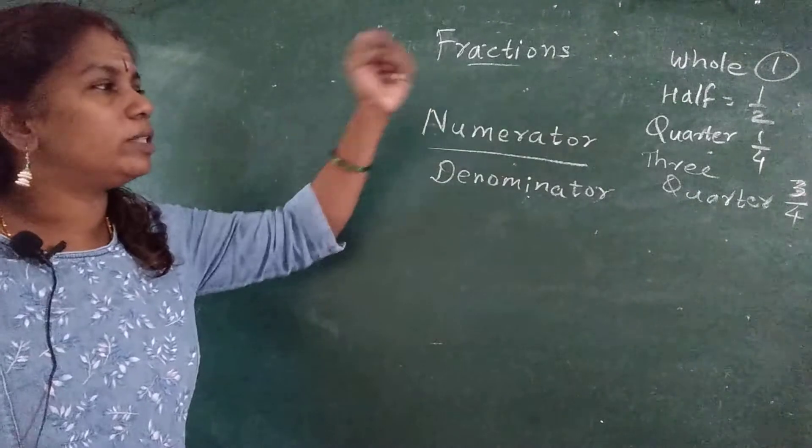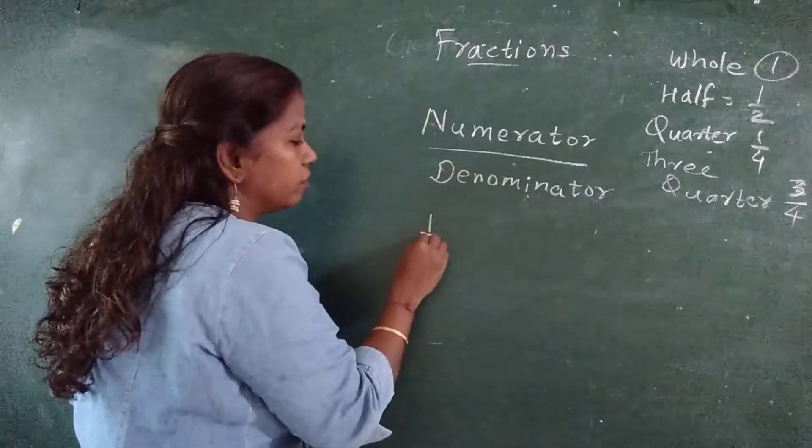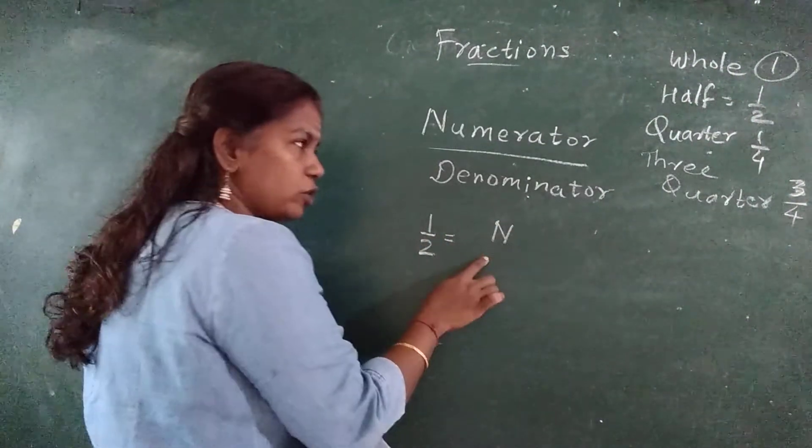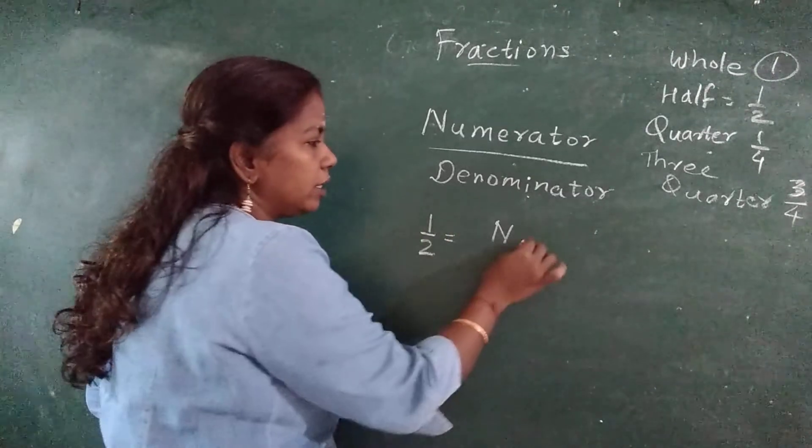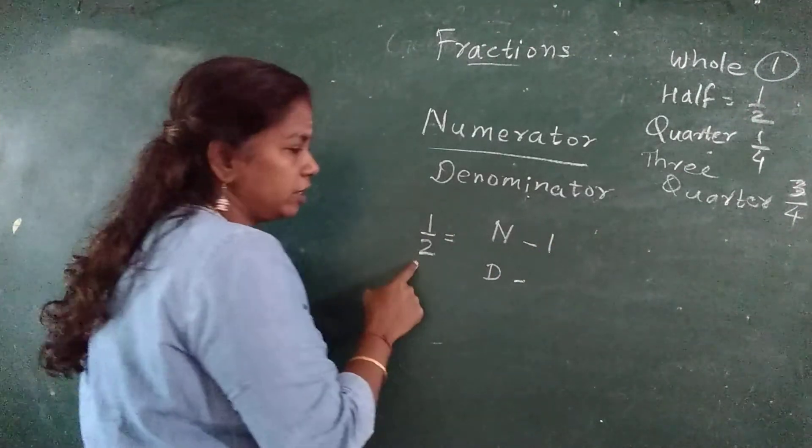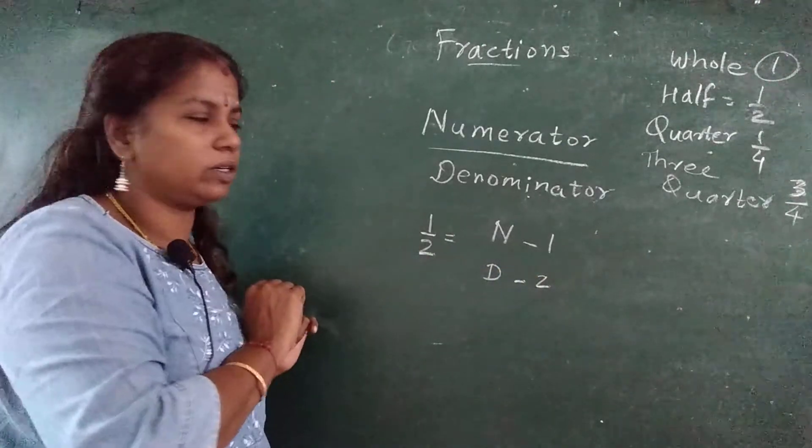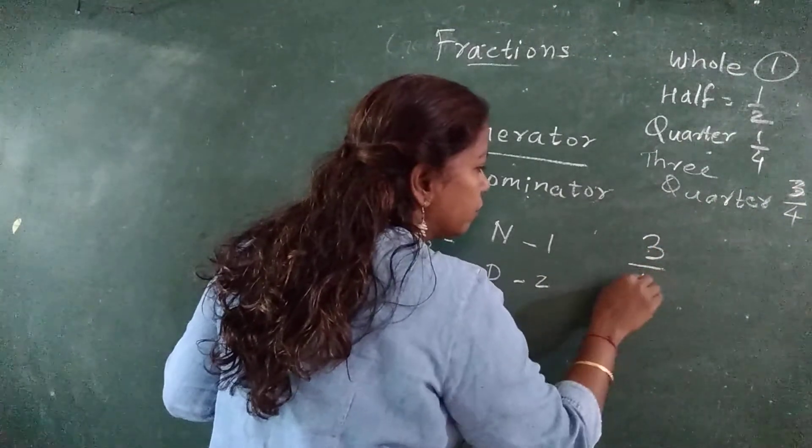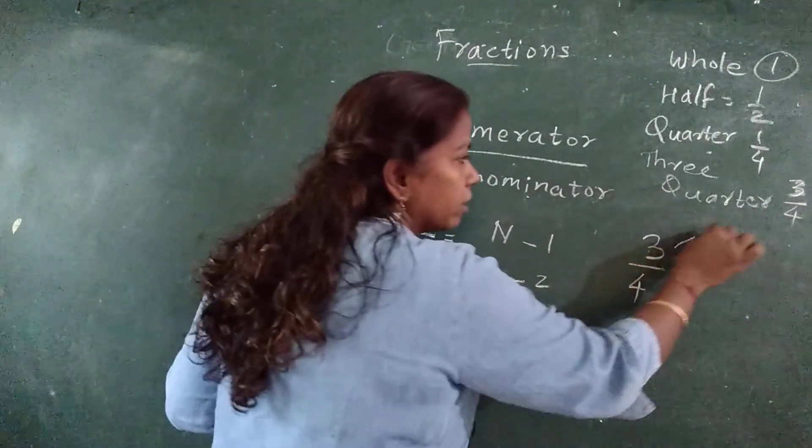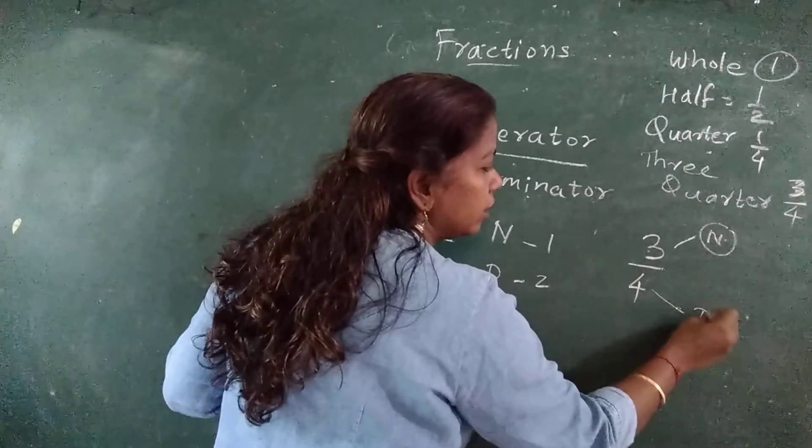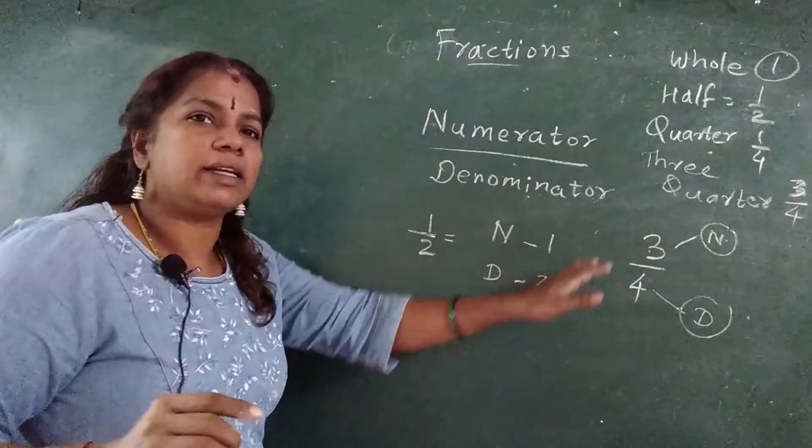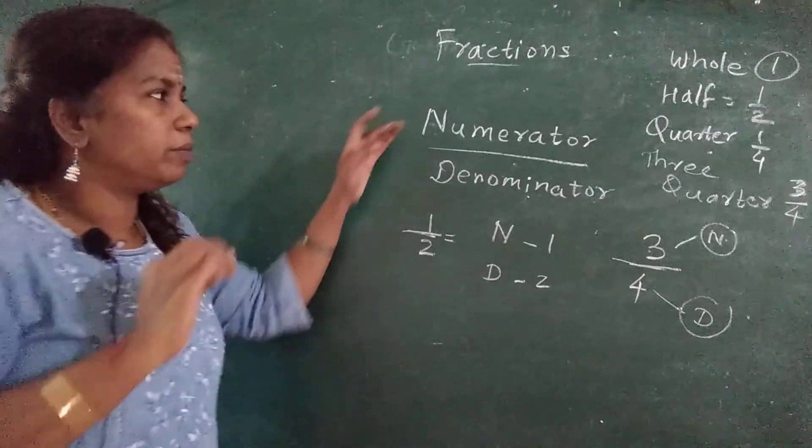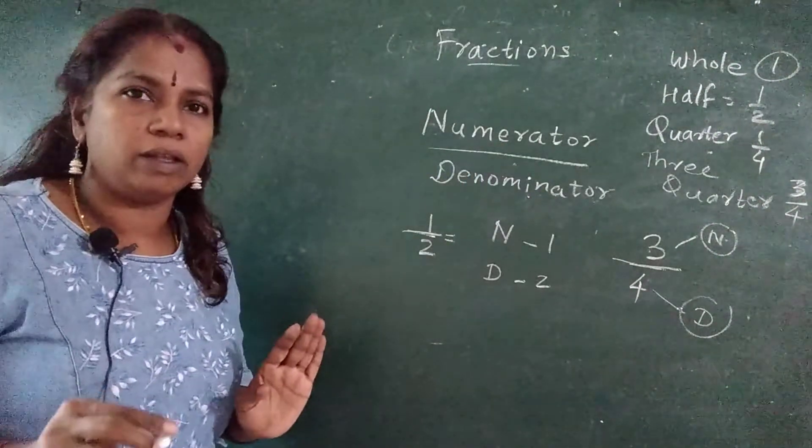Fine. Now this fraction, how I have written? Half. Now in this half, what is numerator? I put short form N. One is numerator. What is the denominator? Two is the denominator. How I write a fraction? Suppose I am writing 3 upon 4. 3 is the numerator, 4 is the denominator. This numerator and denominator is separated by a line. Numerator and denominator is separated by a line.